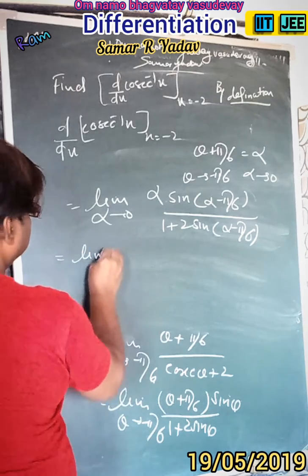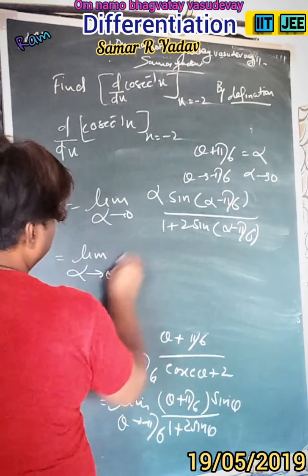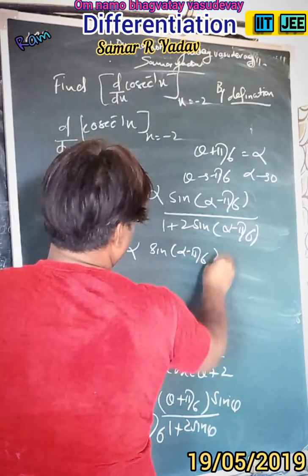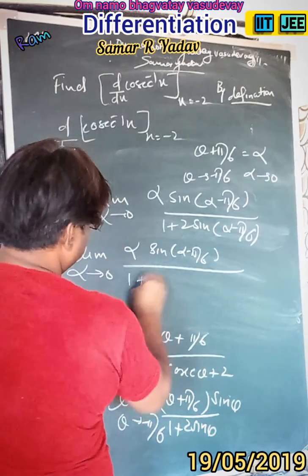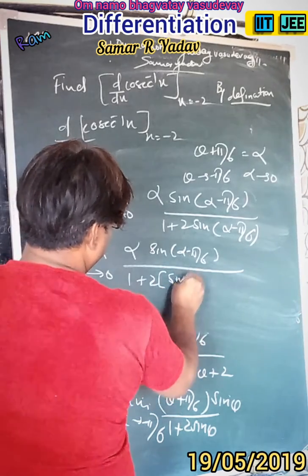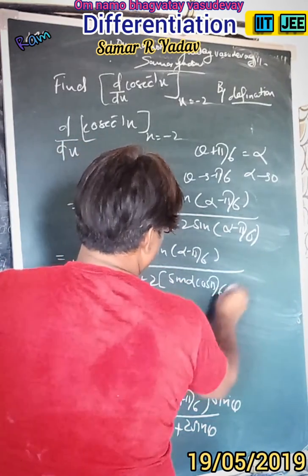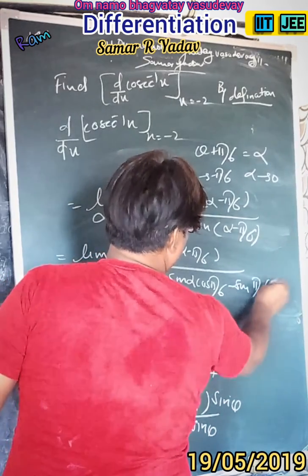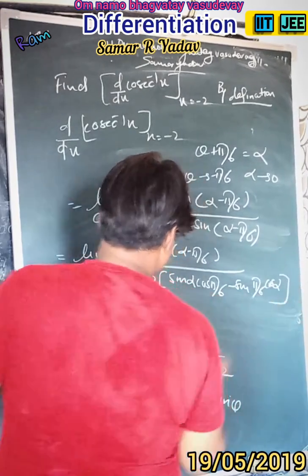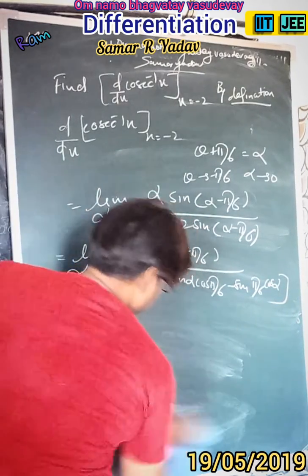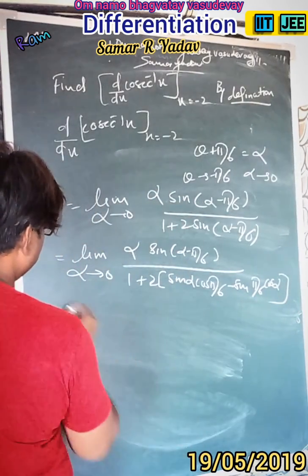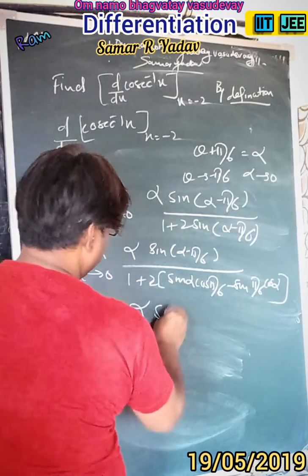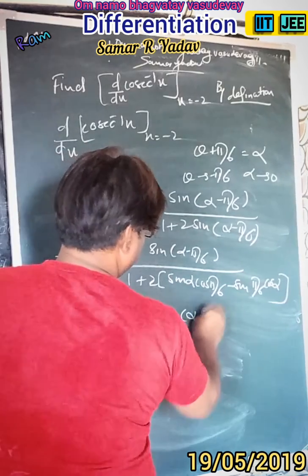Now solving this further: limit α tends to 0 of α times sin(α - 5π/6), using the formula 1 + 2[sin(α)cos(5π/6) - sin(5π/6)cos(α)]. So we can write this is equal to 1/6, keeping this value: limit α tends to 0 of α times sin(α - 5π/6).